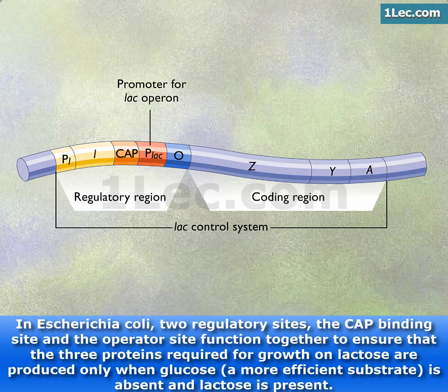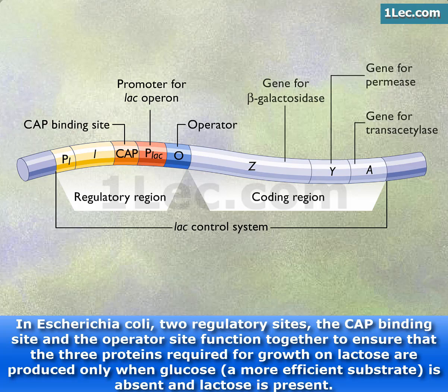In Escherichia coli, two regulatory sites, the CAP binding site and the operator site, function together to ensure that the three proteins required for growth on lactose are produced only when glucose, a more efficient substrate, is absent and lactose is present.